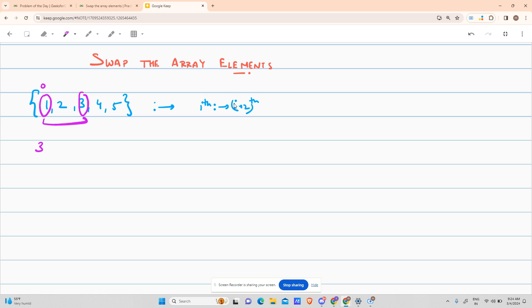You move to the next index. That is here, i+2 is here. Swap these two. The array becomes 3, 4, 1, 2, 5. You move here, you swap it with this. The array becomes 3, 4, 5, 2, 1.